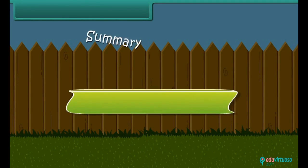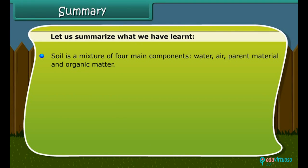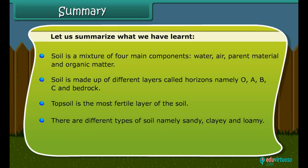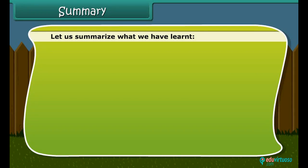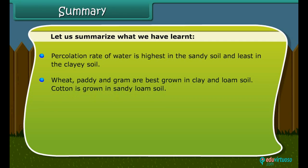Summary: Soil is a mixture of four main components — water, air, parent material and organic matter. Soil is made up of different layers called horizons, namely O, A, B, C and bedrock. Topsoil is the most fertile layer of the soil. There are different types of soil: sandy, clay and loamy. Soil erosion is a process of removal of the top layer of the soil. The percolation rate of water is highest in sandy soil and least in clay soil. Wheat, paddy and gram are best grown in clay and loam soil, while cotton is grown in sandy loam soil.